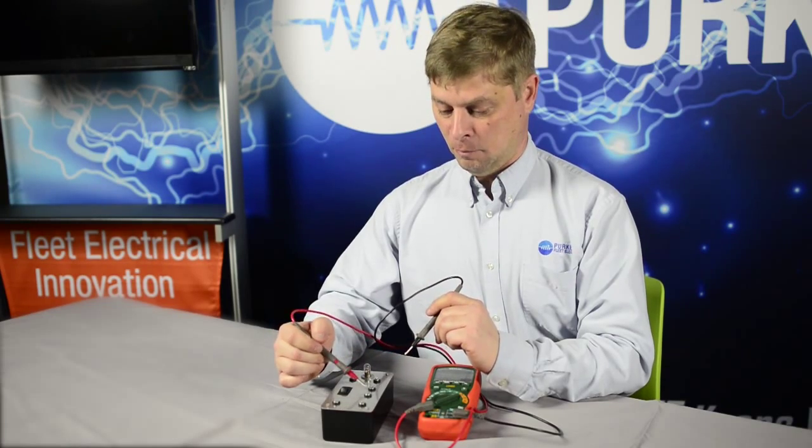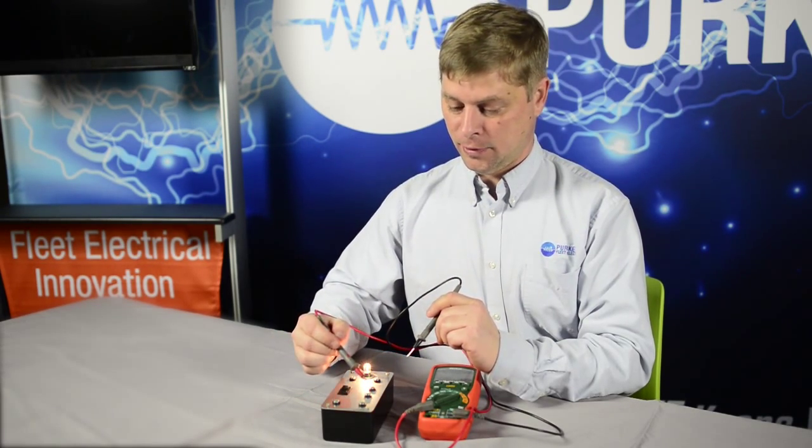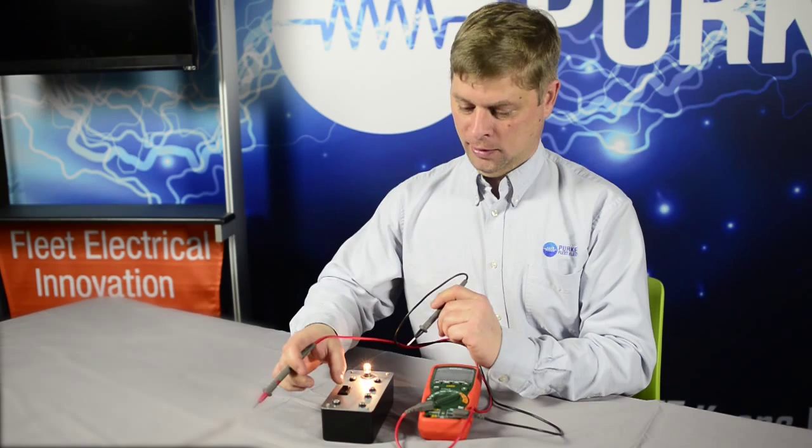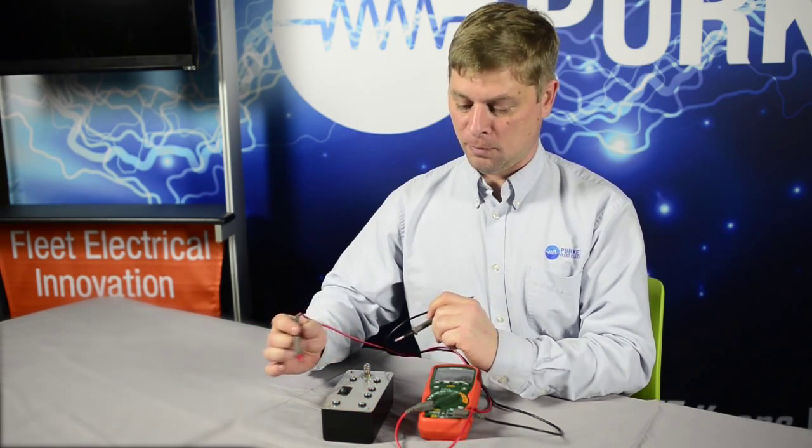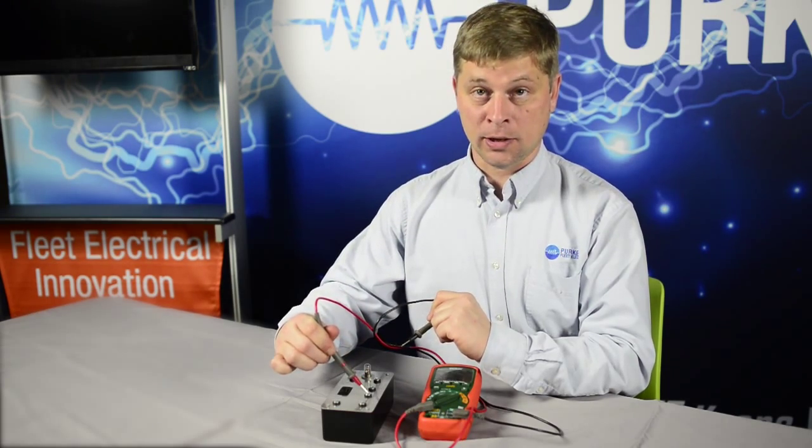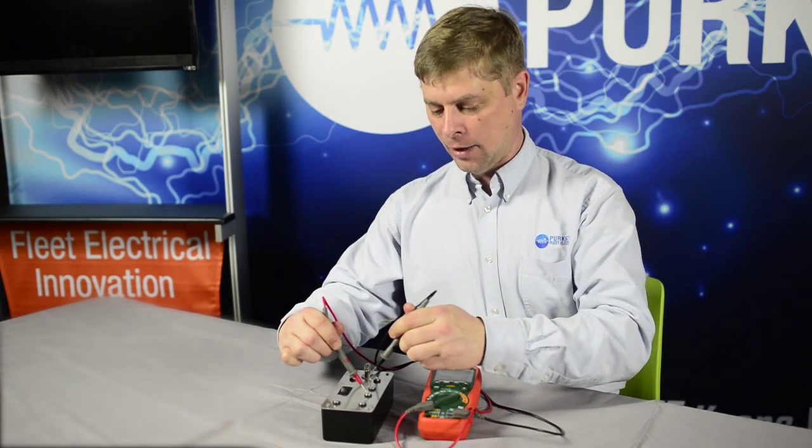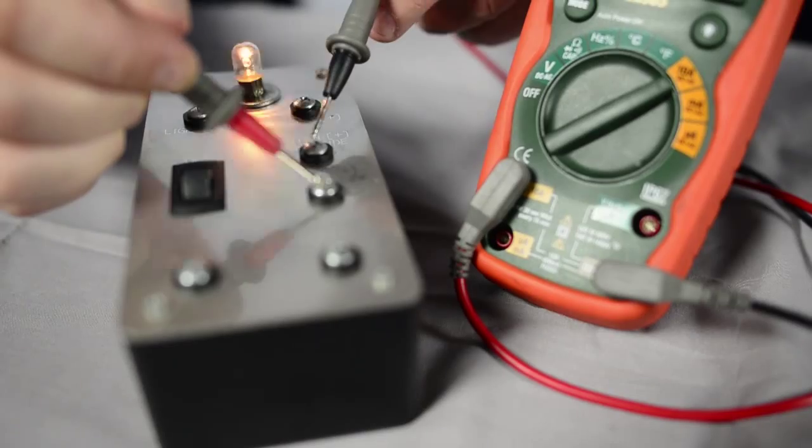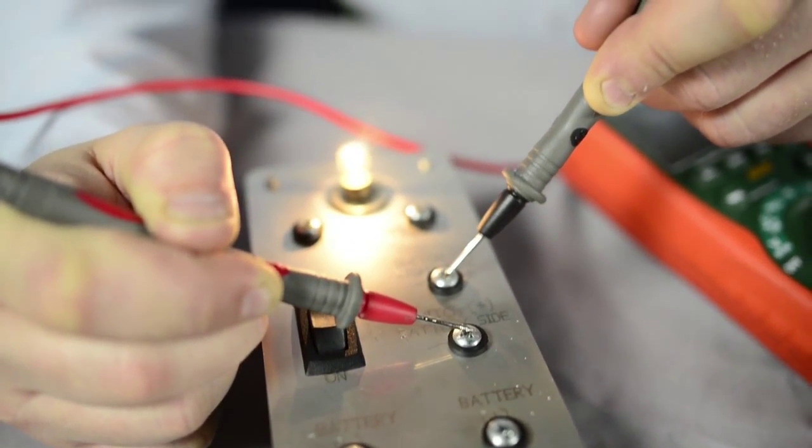The way this works is, before we used our switch to connect this point to this point. Now, instead of using the switch, we're going to use our meter. Go on one side of the switch, it's going to flow through the red lead, through the meter, come back out of the black lead, and complete the circuit. That way, all the current is flowing through our meter.